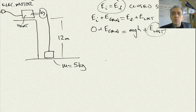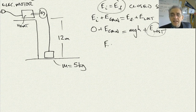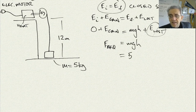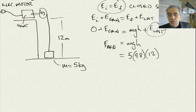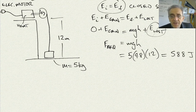The required energy equals MGH. In this case it's 5 kilos times 9.8 times 12. This gives us 588 joules of energy required to lift the mass to the top.